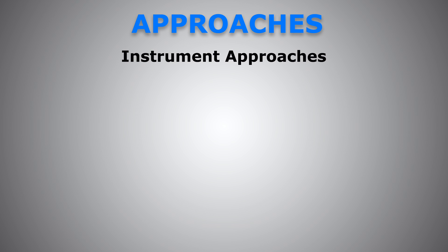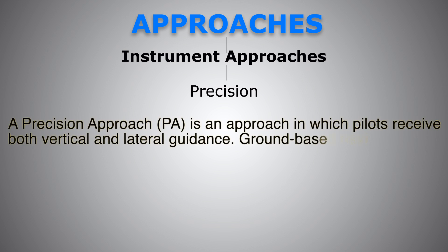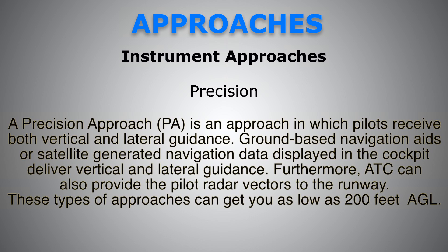There are three types of instrument approaches. The first one is precision approach. A precision approach is an approach in which pilots receive both vertical and lateral guidance. Ground-based navigation aids or satellite-generated navigation data displayed in the cockpit deliver vertical and lateral guidance. Furthermore, ATC can also provide the pilot radar vectors to the runway. These types of approaches can get as low as 200 feet above the ground.